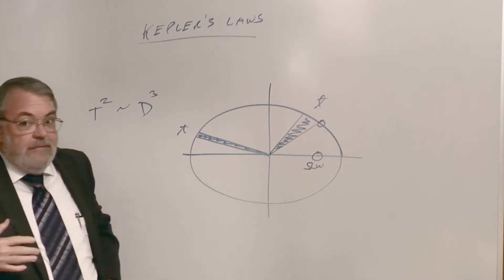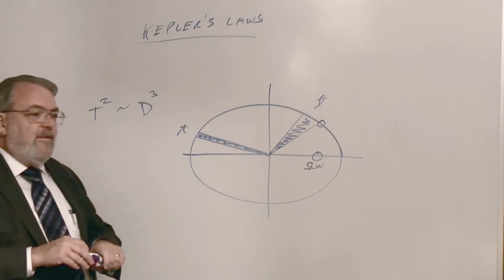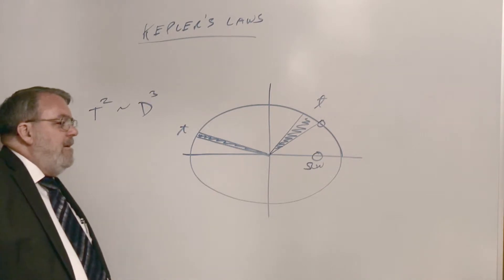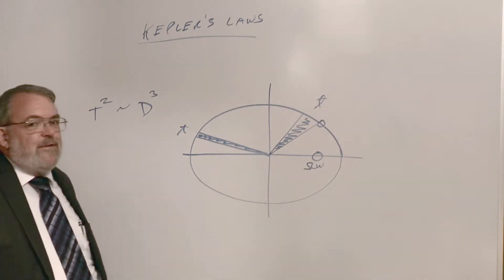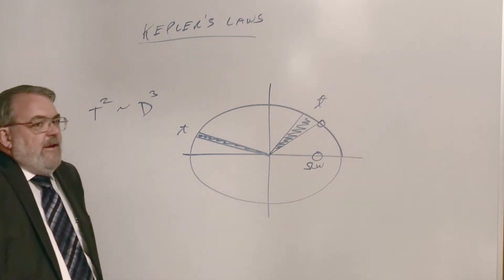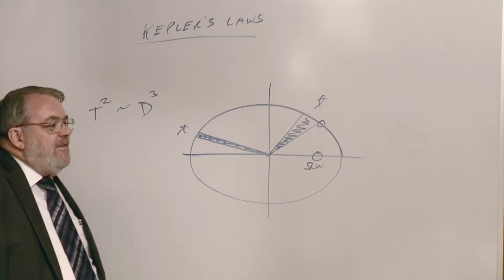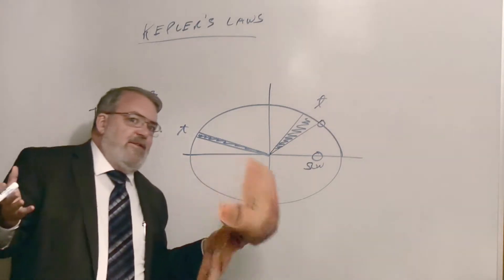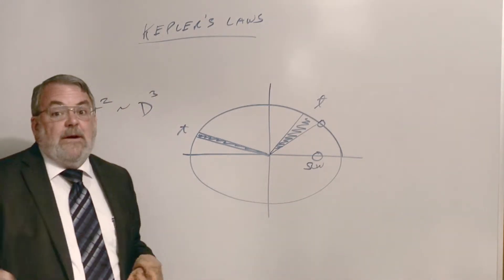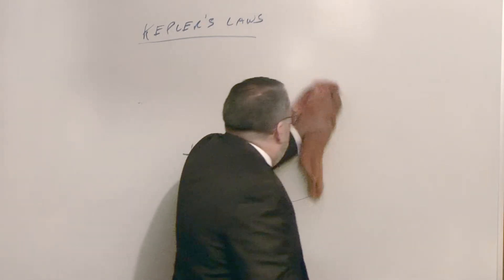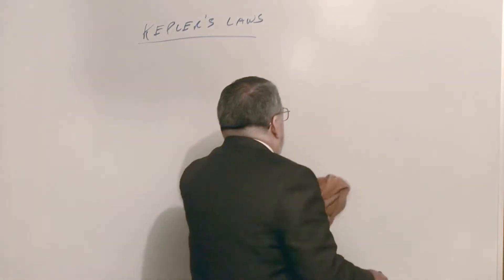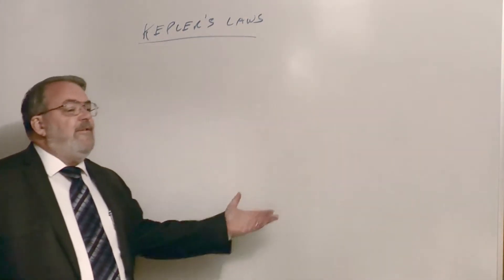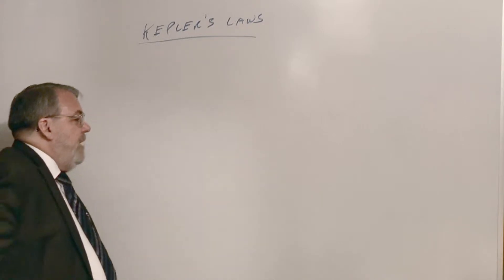Comets vary greatly. Encke's comet goes around the Sun every about three and a half years, so it's the closest one to the Sun. I don't think you can see it with the naked eye, it's pretty faint. But there's some comets that we might see them once and never see them again because it might take another 30,000 years for it to come around. In the 1990s there were two major comets that I got to see.